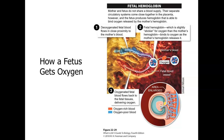The mother and fetus do not share a blood supply, but their separate circulatory systems come close together in the placenta. Fetal hemoglobin has a higher affinity for oxygen than maternal hemoglobin, allowing it to pull oxygen from the mother's blood. Deoxygenated fetal blood flows near the mother's blood, fetal hemoglobin latches onto the oxygen, and oxygenated fetal blood flows back to the fetus.